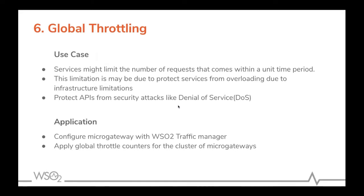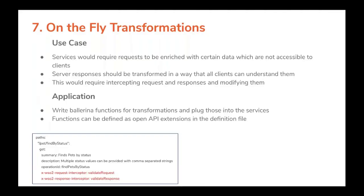Micro gateway also supports global throttle throttling. Previously in 2.0 there was only local throttling — if you allow 100 requests for a particular API but expose it using three micro gateways, local throttling would actually allow 300. With global throttling, all micro gateways publish throttling events to the central WSO2 API Manager traffic manager component, which then notifies the micro gateways about the throttle decisions.